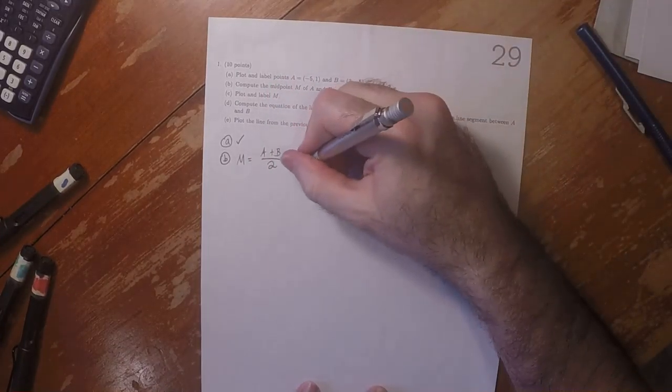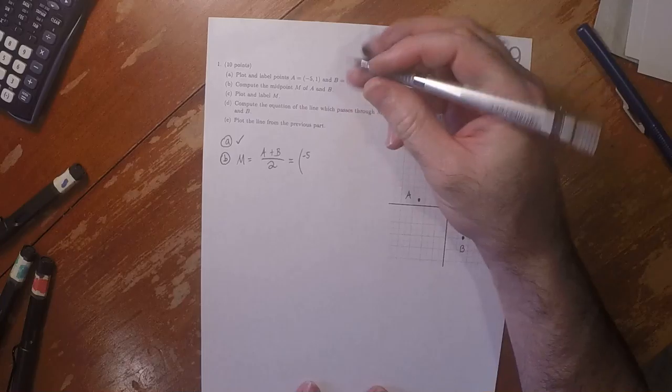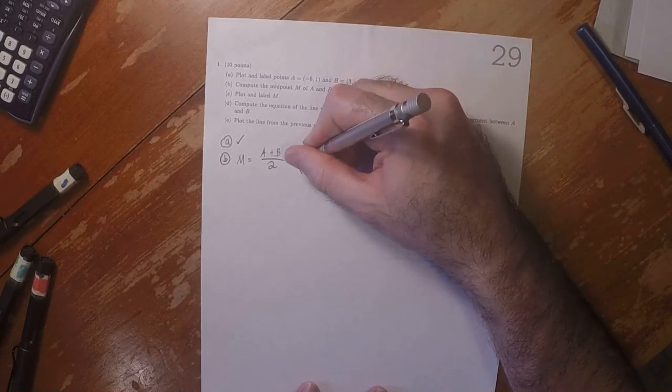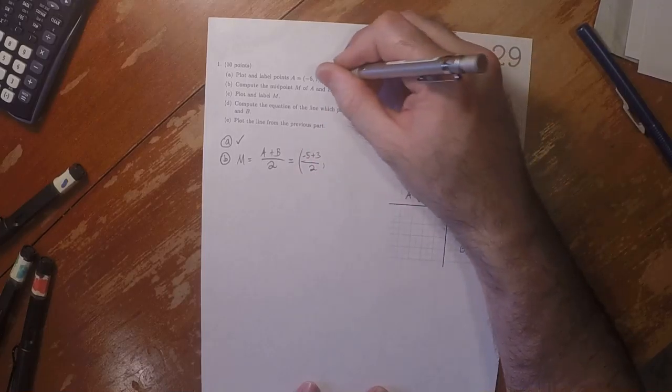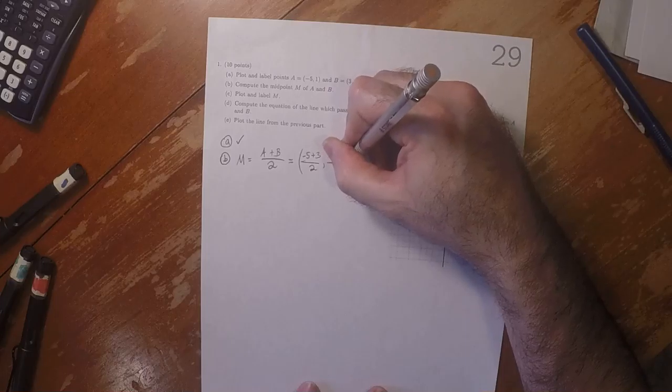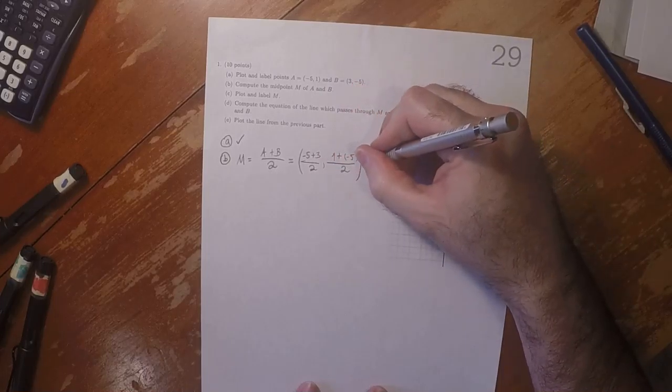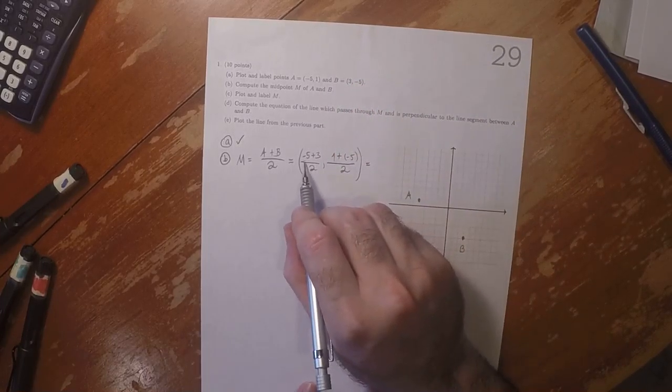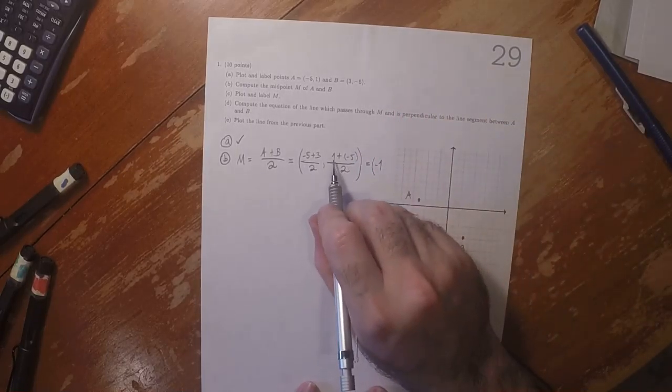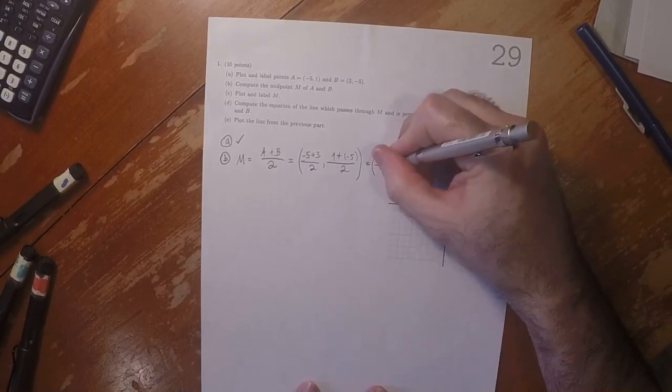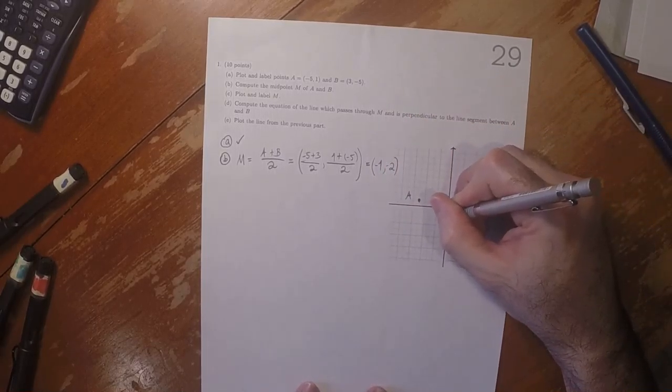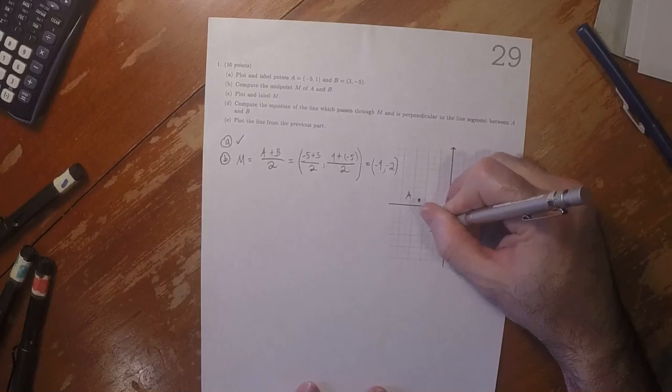So that would be negative 5 plus 3 divided by 2, and then 1 plus negative 5 over 2. So that would be negative 2 over 2 is negative 1, and negative 4 over 2 is negative 2. So negative 1, negative 2. So that's the midpoint.